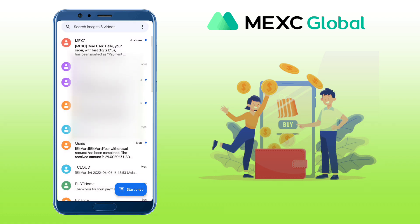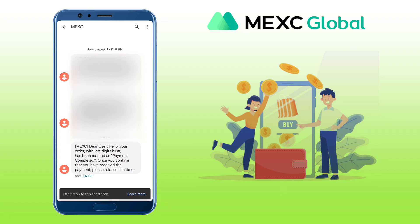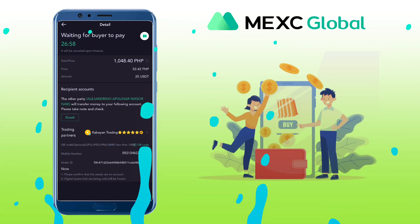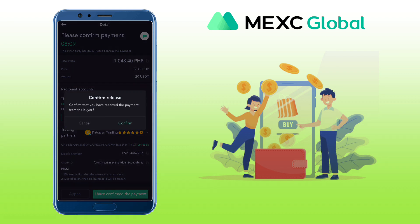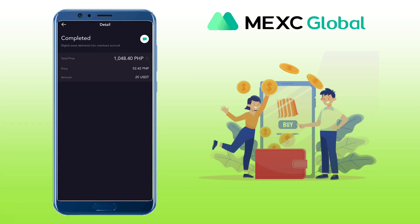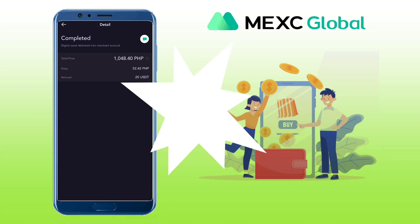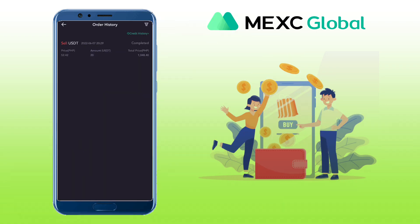I also received the MEXC SMS notification that my order was fulfilled. Please double-check your wallet and make sure the funds are completely received. If yes, click 'I have confirmed the payment' and click Confirm again. Awesome — it's completed! That's how easy and fast P2P fiat trading on MEXC Global works.